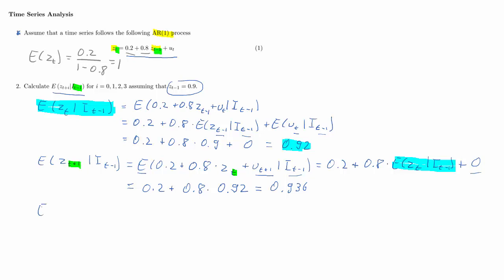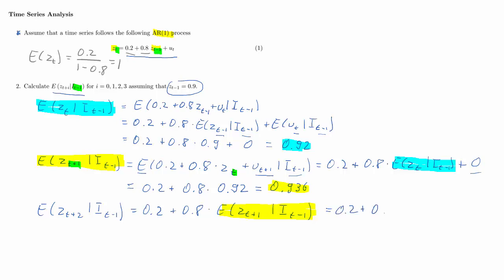This pattern now repeats. We calculate a three-step-ahead forecast: the expected value of Zt plus 2 given information at time T minus 1. We can see the pattern: 0.2 plus 0.8 times the expected value of Zt plus 1 given I_{t-1}, plus an error term with expected value 0. That yellow highlighted term is exactly what we calculated in the previous step — 0.936. Using it in the three-step-ahead forecast gives us 0.948.